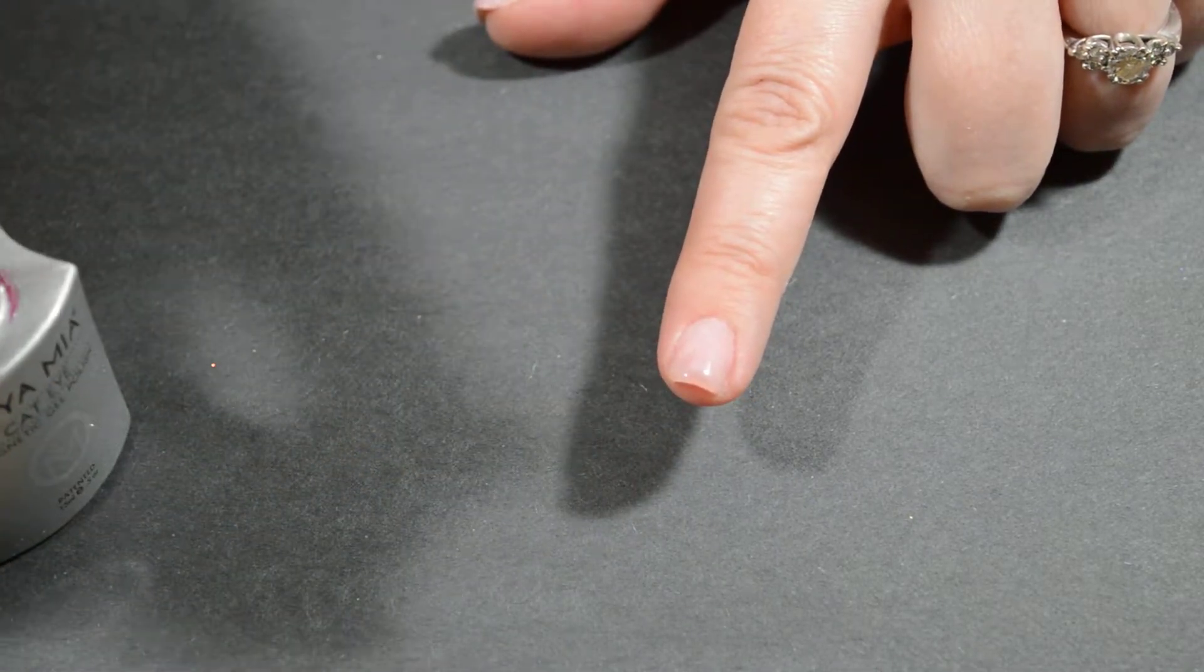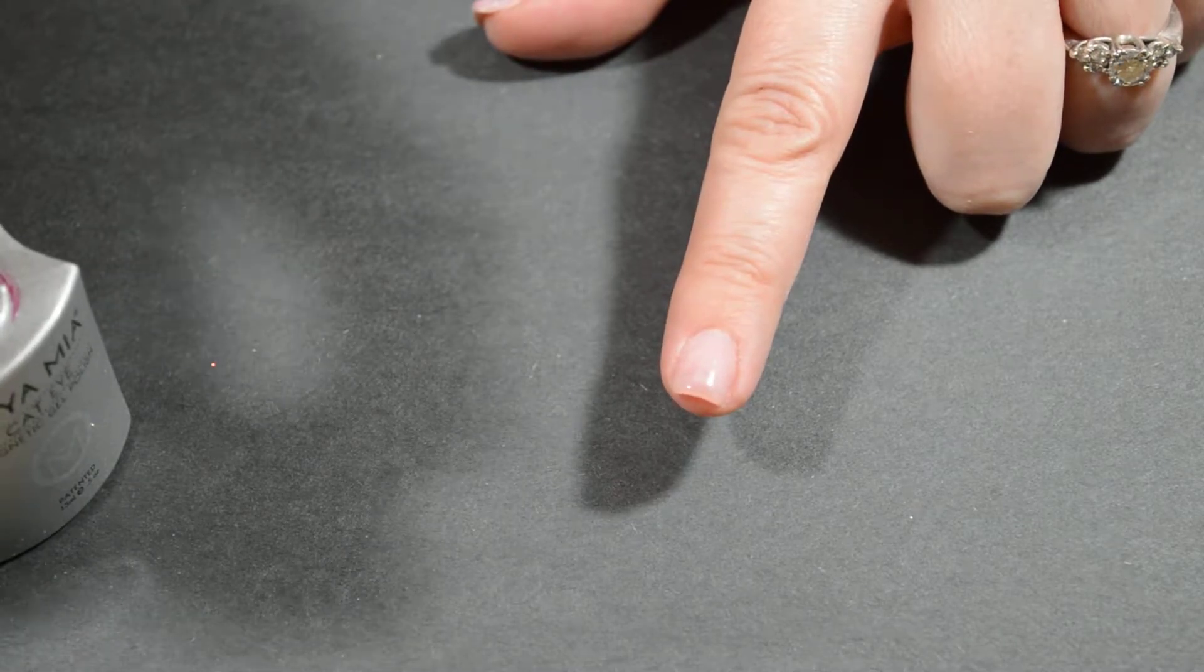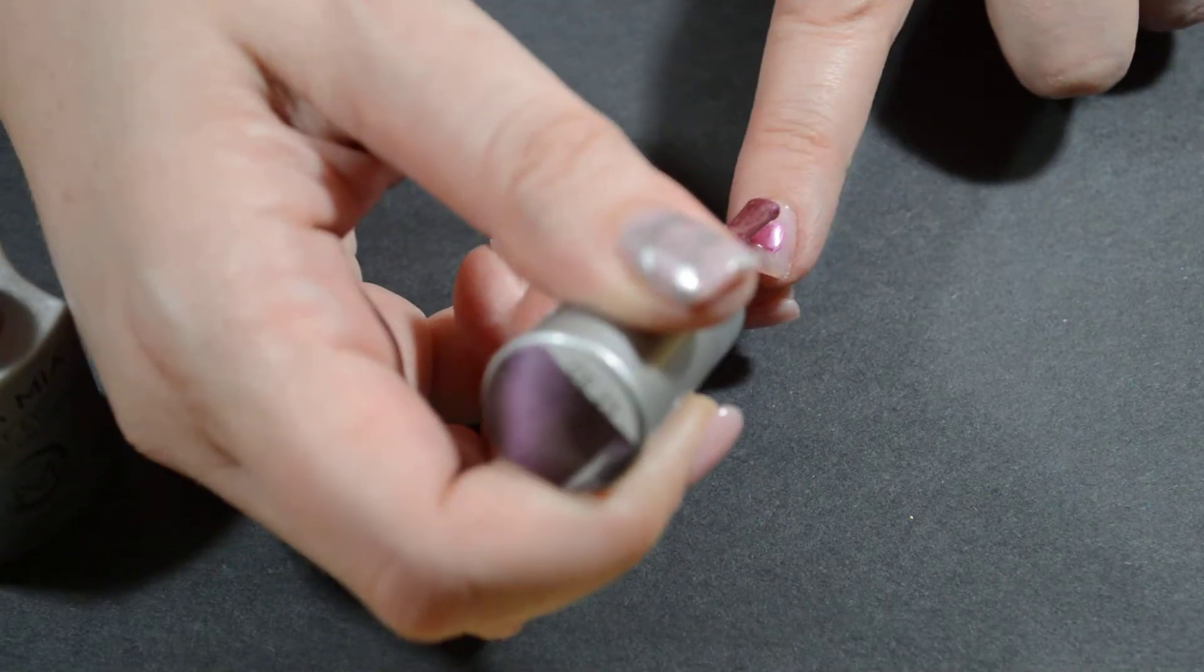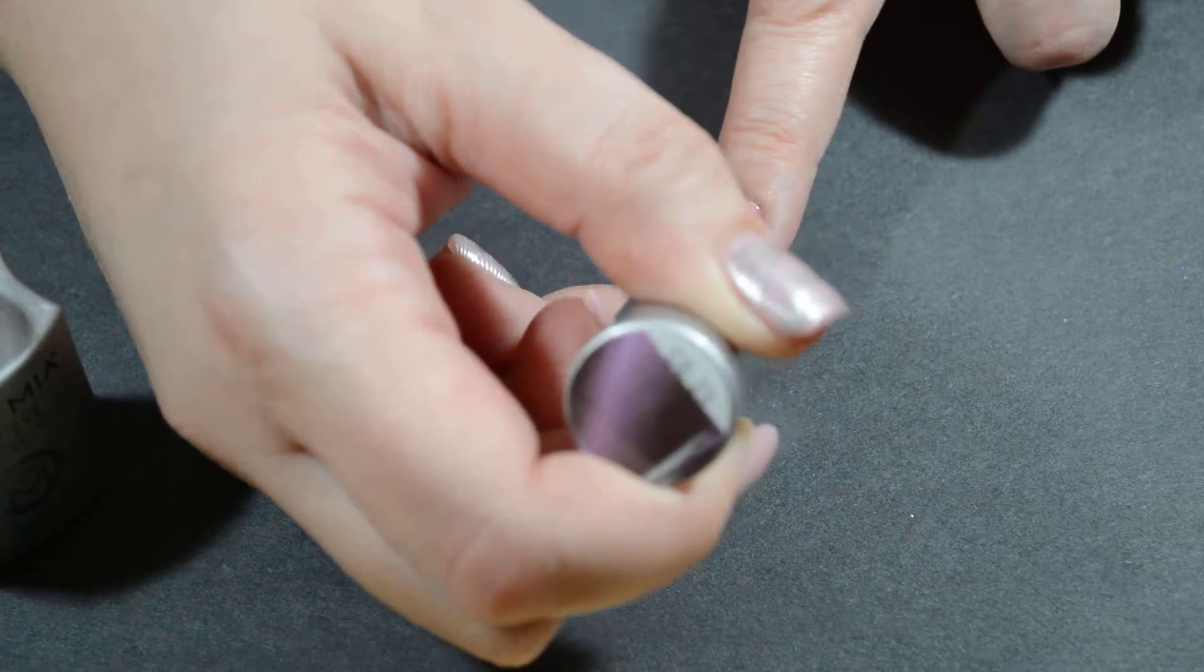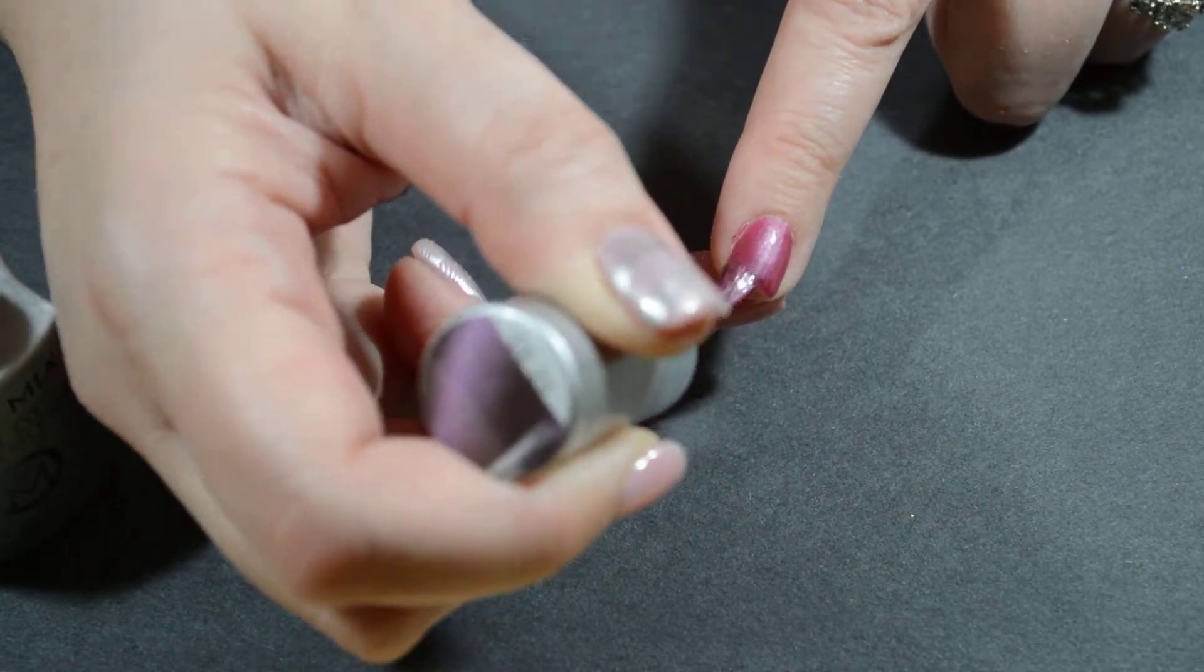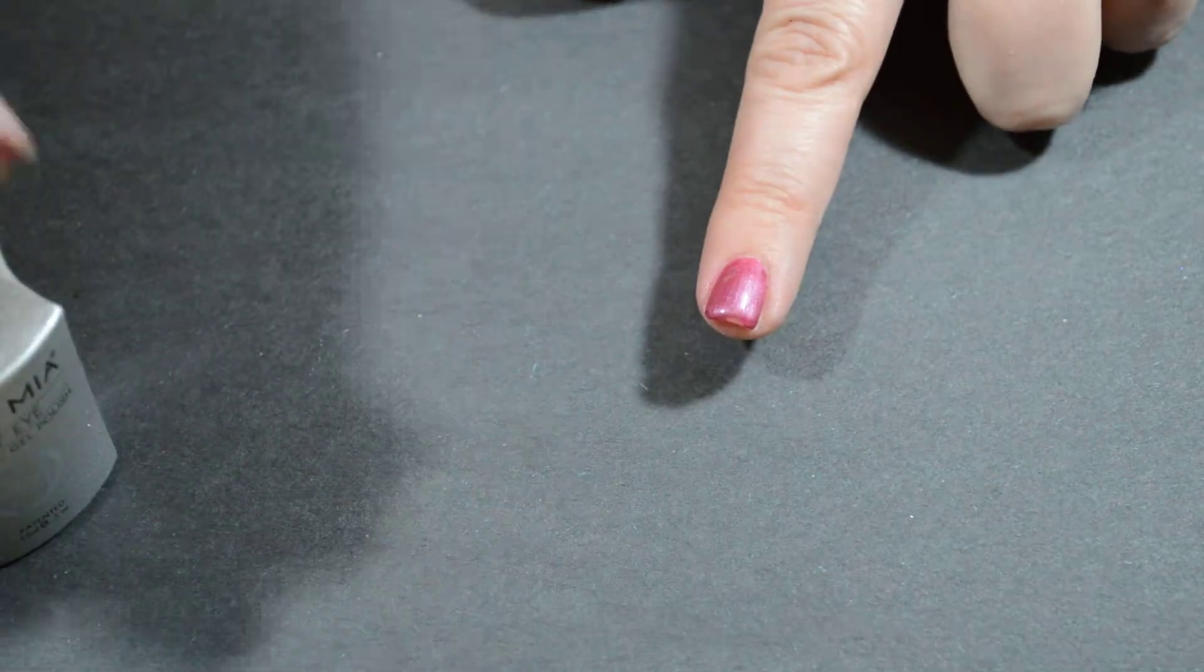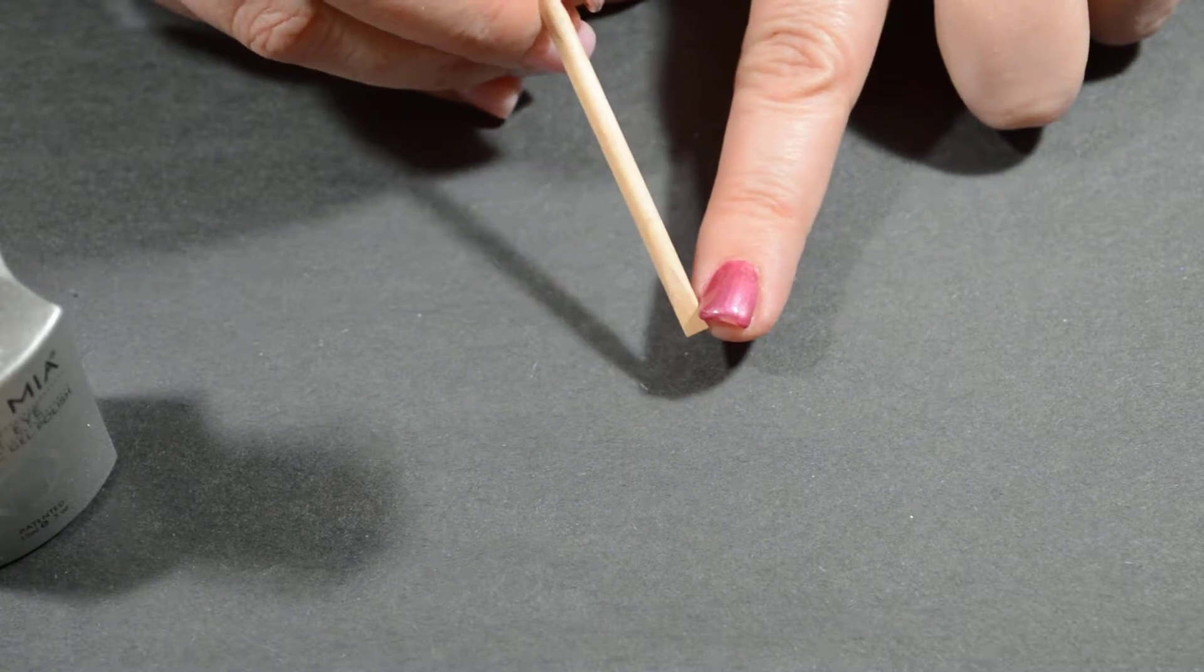Some of these magnetic polishes you need to put a black coat underneath to give it the full effect. I know some of the halo polishes are like that, but the cat eye is not. You just do the first layer of color normal and put it in the cure light.